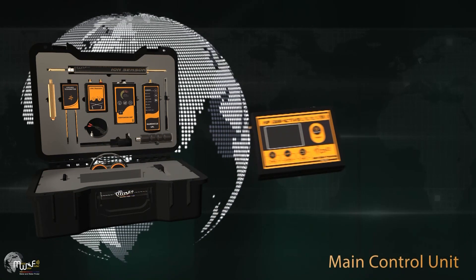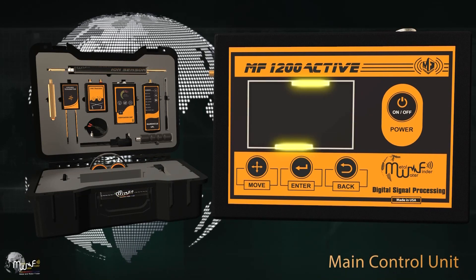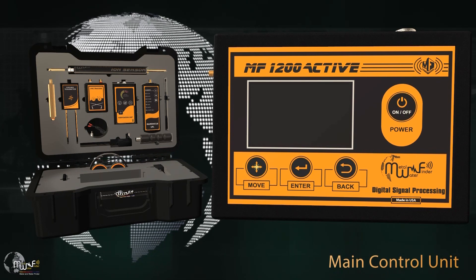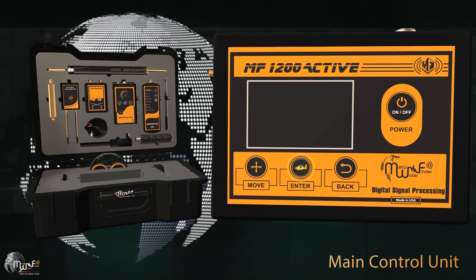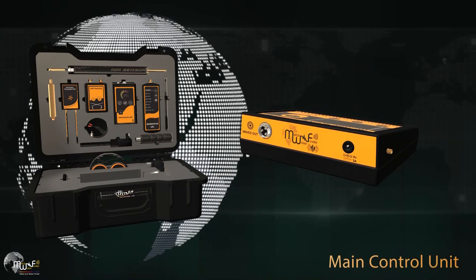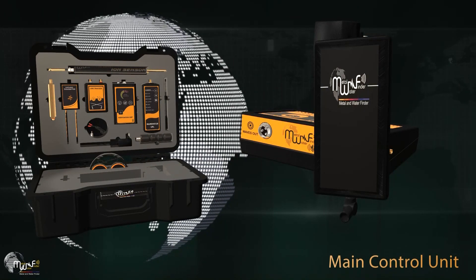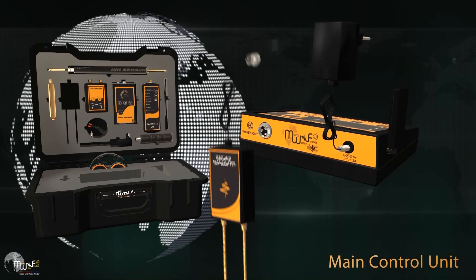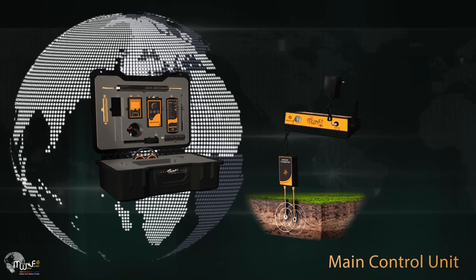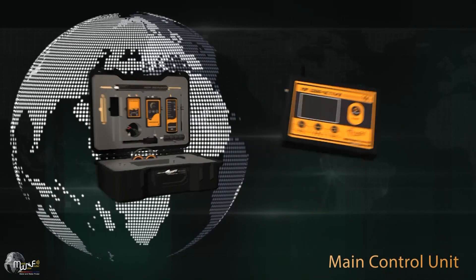The front interface of the main control unit includes a display screen, power button, move button, enter button, and back button. The device's rear and side interfaces contain a charging socket, wireless antenna connection socket, transmitter unit connection socket — which is implanted in the ground to transmit frequency waves — and a headphone socket.